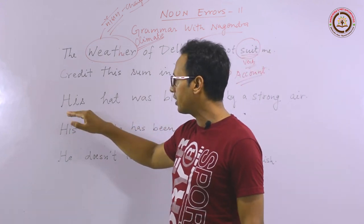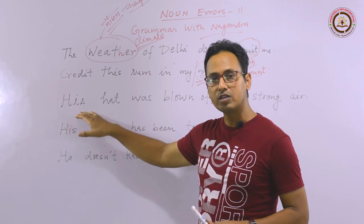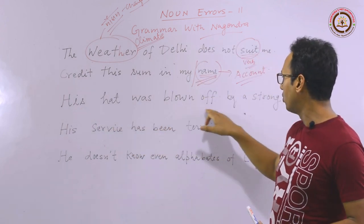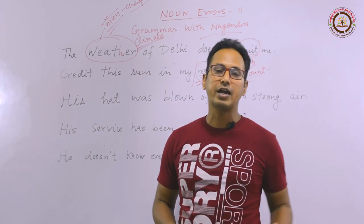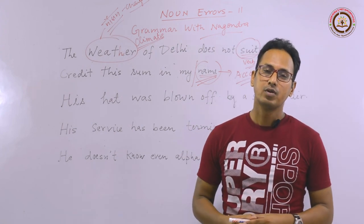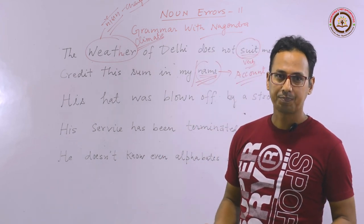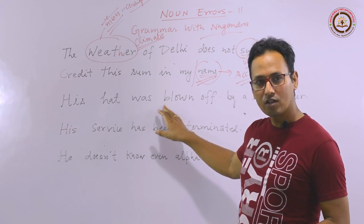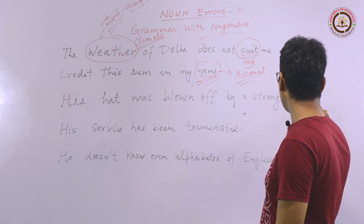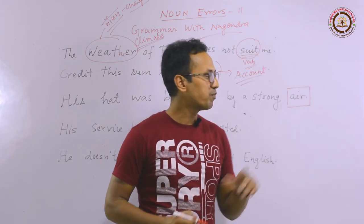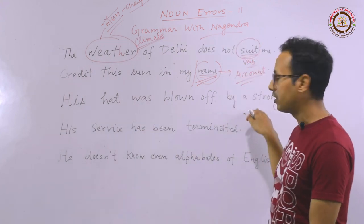The third sentence is one that 99% of people cannot catch, and it is very important. The sentence is: 'His hat was blown off by a strong air.' I ask you — when you go to a shop to buy a hat and the shopkeeper places it on your head for trial, does the hat fly off? If not, then the shop also has air present in it. So why didn't the hat fly off there?